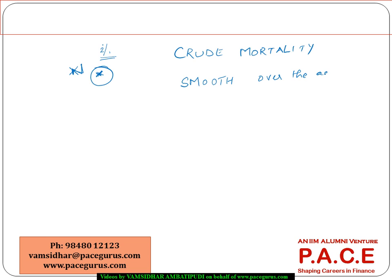It may so happen that during the observation period, people with age 20 might have died more compared to people with age 21, and again with age 22, the numbers or proportion would have been lesser. Now, how do I justify that people at 21 die lesser compared to both 20 and 22? In general, our understanding is that with increasing age, the mortality rate keeps increasing, at least for most ages.